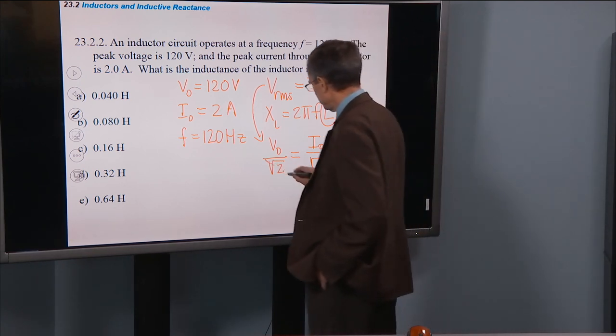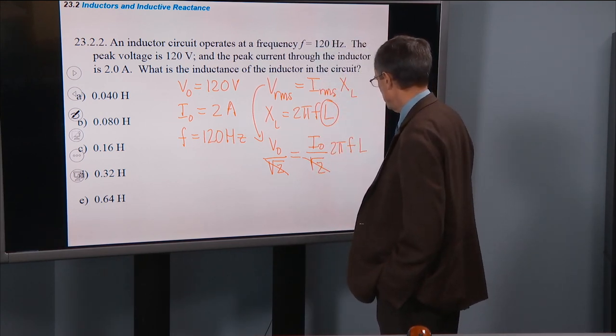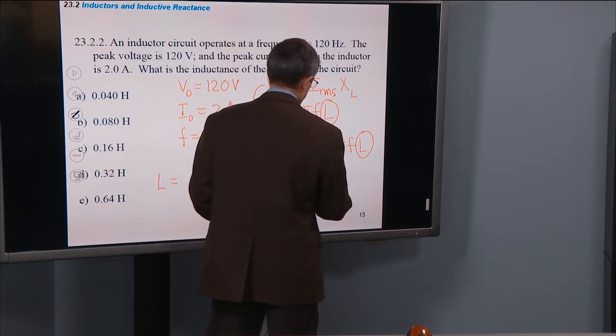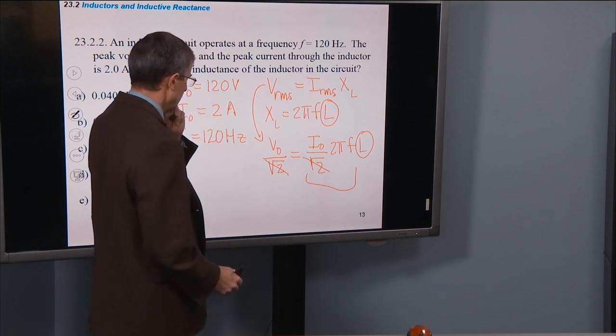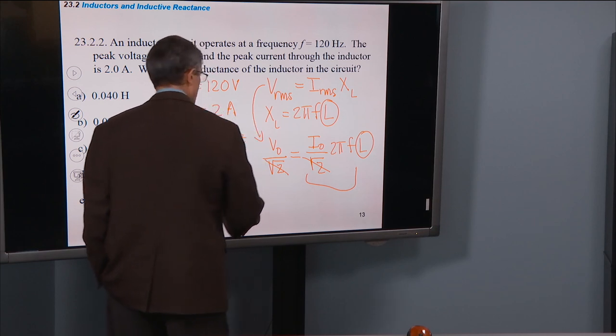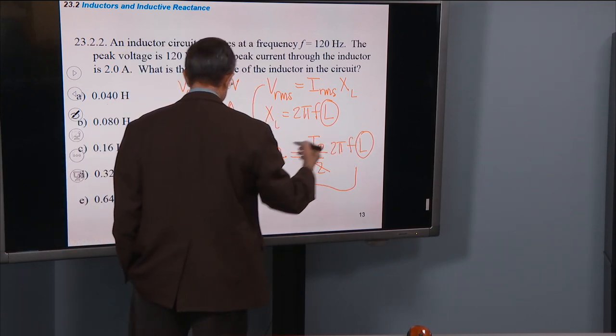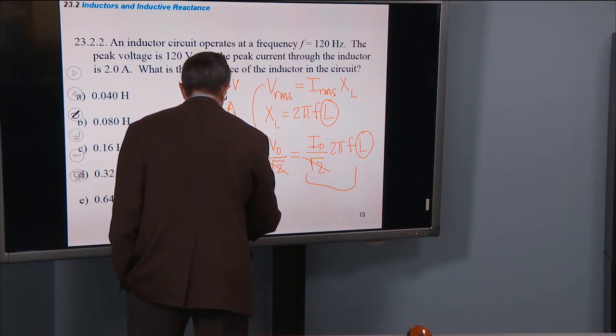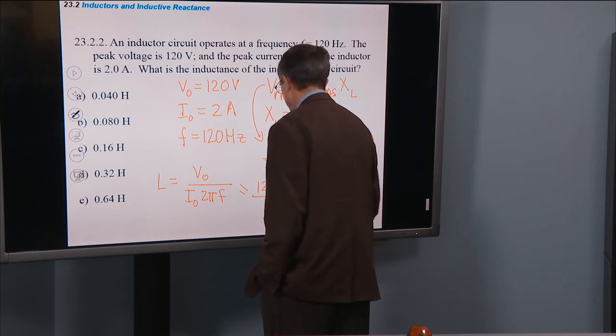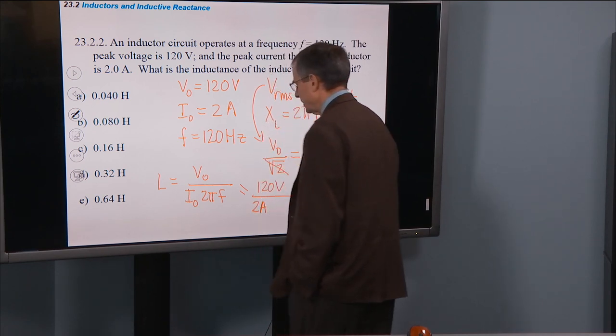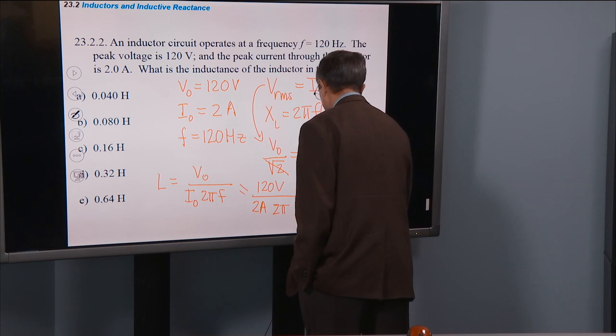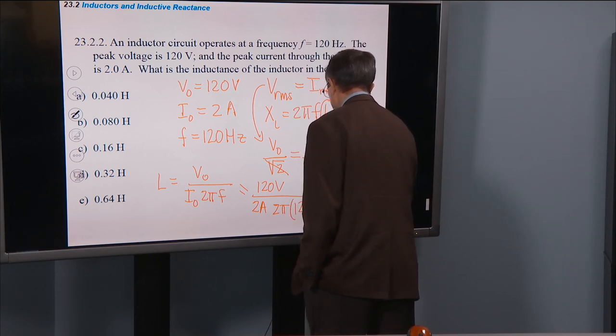Well, now a miracle occurs. We can multiply both sides by the square root of 2, and we can solve for L by dividing both sides by this amount here: I_0 times 2π times f. So this will be V_0, whatever's on the left side, divided by this mass on the right side, I_0 times 2πf. And that'll give me L, and that's what I want. V_0 is 120 volts. I_0 is 2 amps. 2π is 2π. And the frequency is 120 hertz. Happy day. What do we get out of the deal?